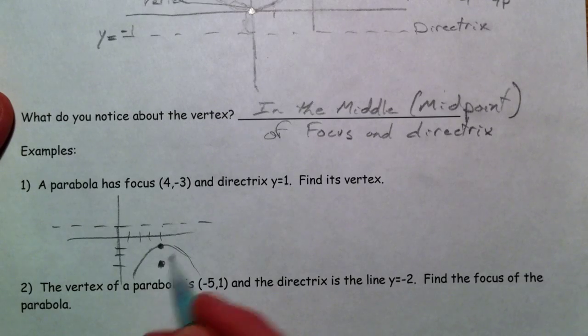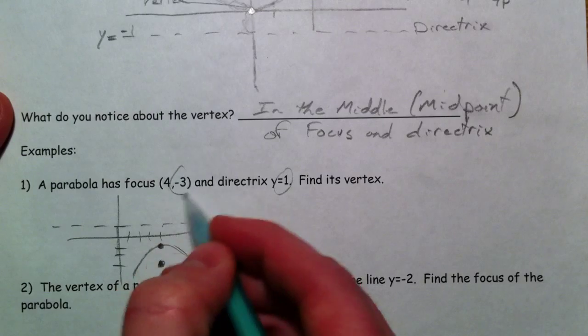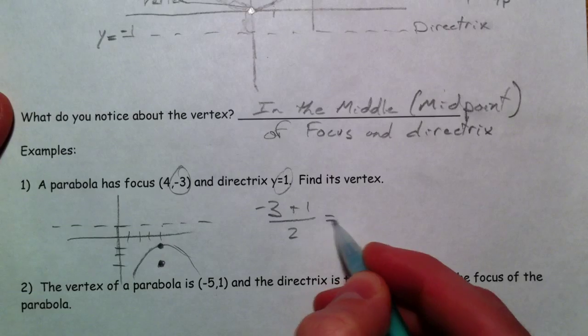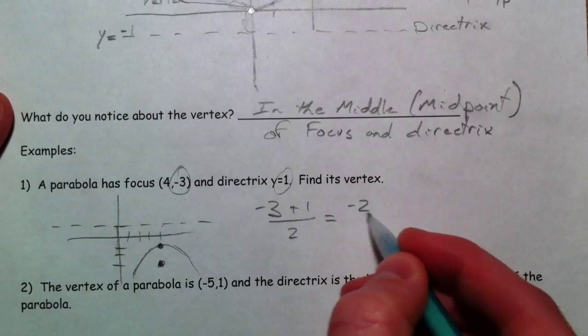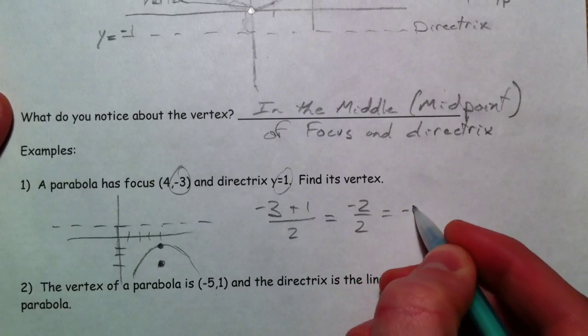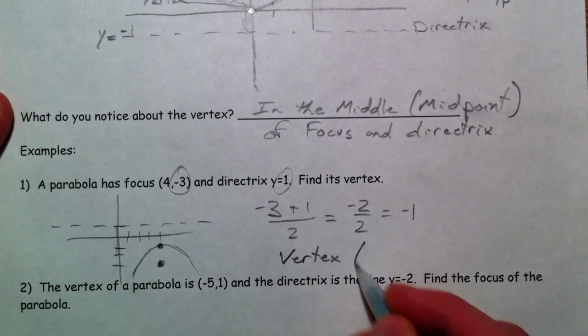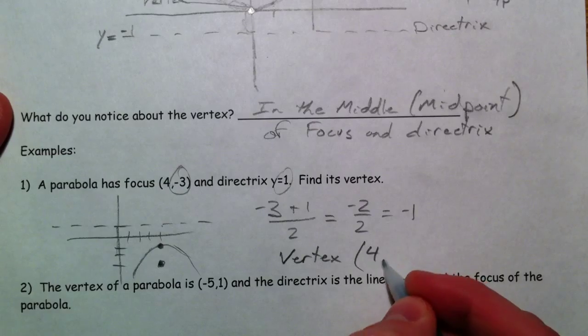How do we find it? Well, y equals 1. So let's pay attention to the y coordinate and negative 3 plus 1, average them together. So that's negative 2 divided by 2, so that's negative 1. So the vertex is (4, -1).